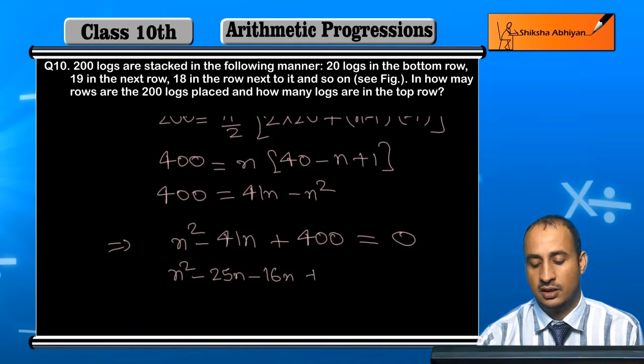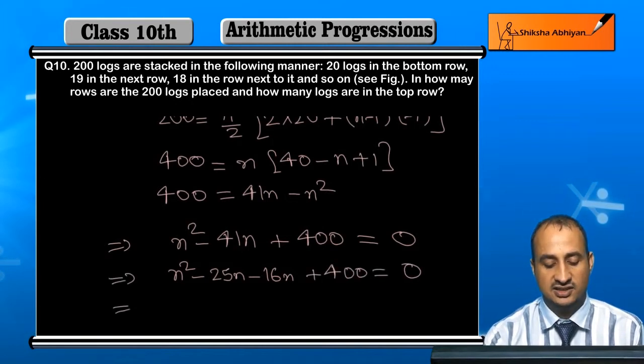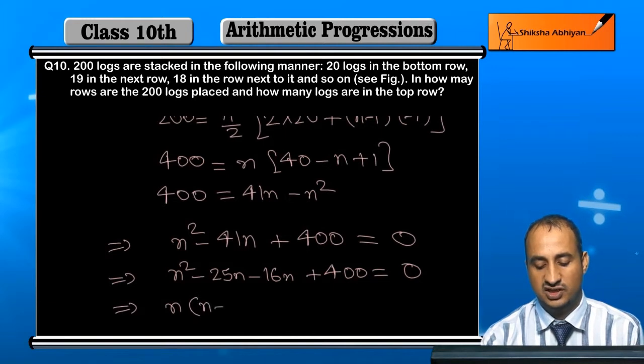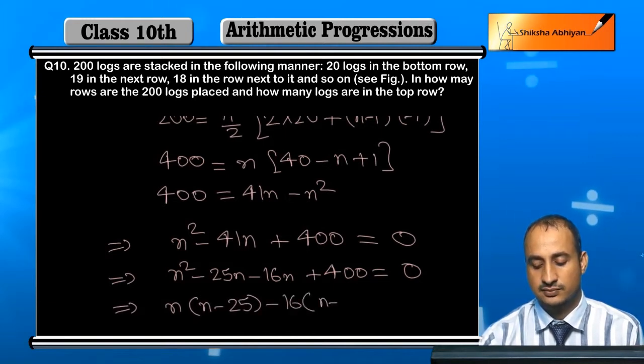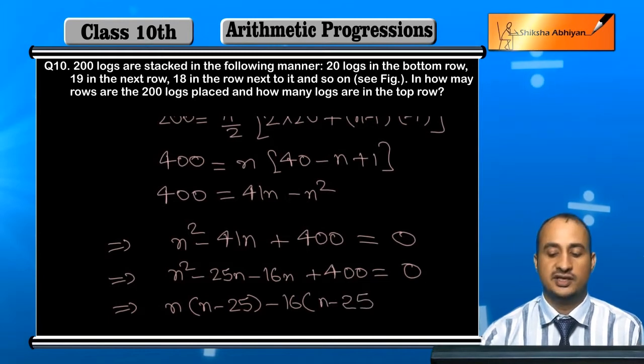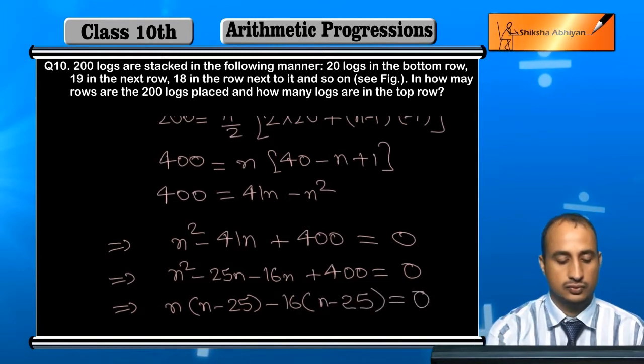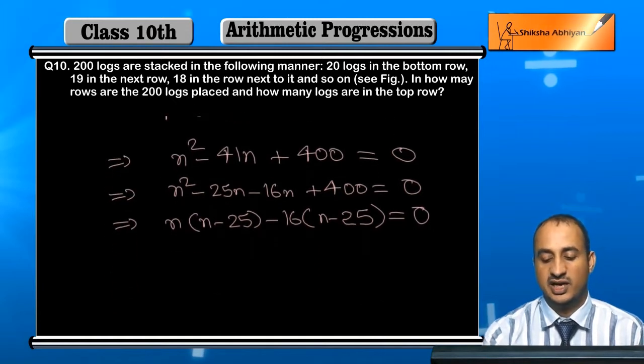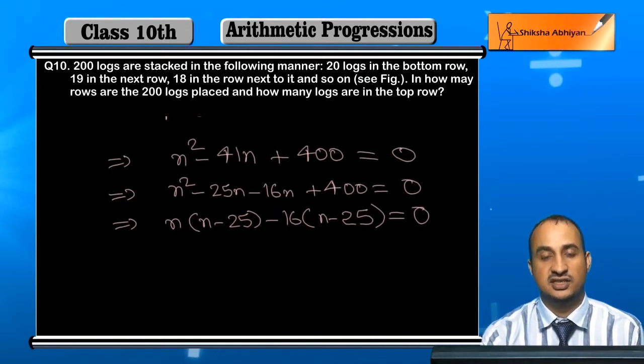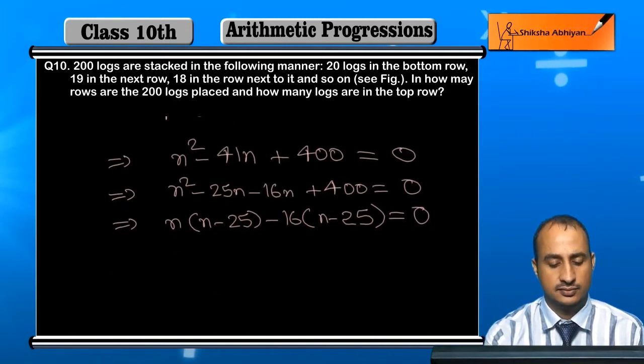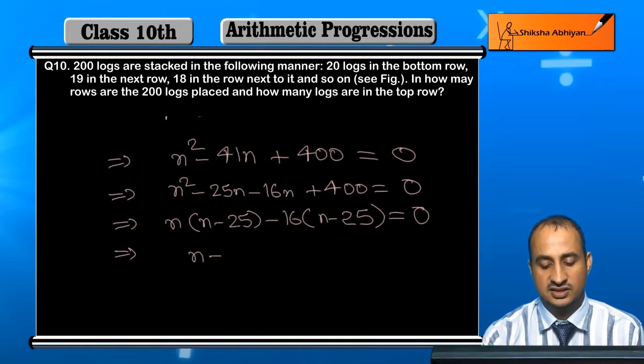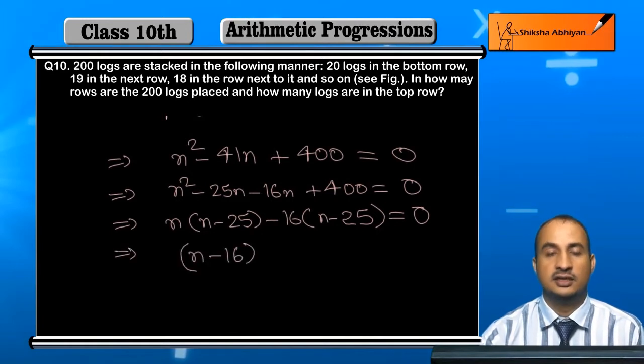Now what we do is take n common here, which gives n times (n minus 25). Here we take n common, then minus 16 times (n minus 25). This gives us (n minus 16)(n minus 25) equals 0.